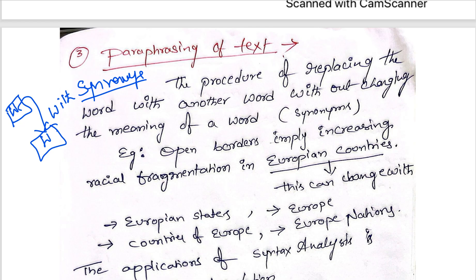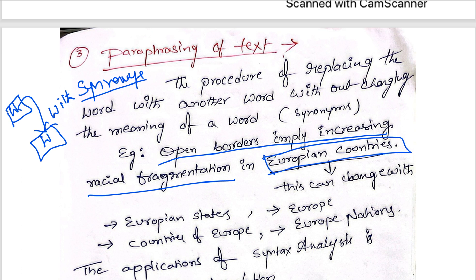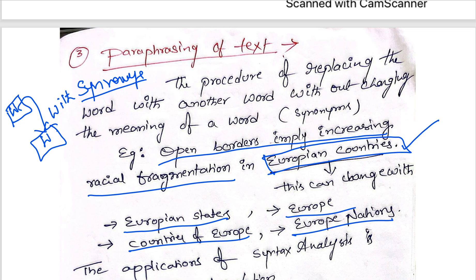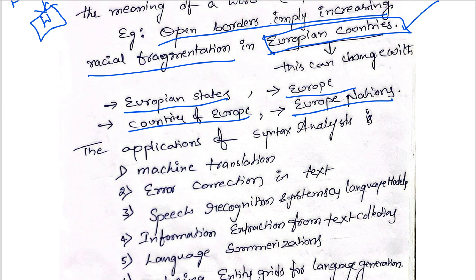Here is a simple example of paraphrasing: 'Open borders imply increasing racial fragmentation in European countries.' Taking the phrase 'European countries', it can be replaced with 'European states', or 'countries of Europe', or 'European nations' — all without changing the meaning. This is paraphrasing the text.